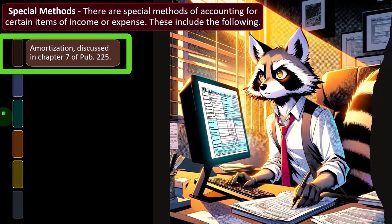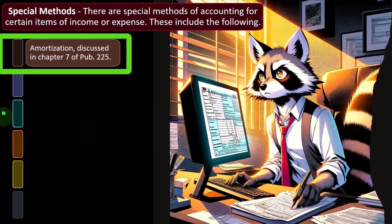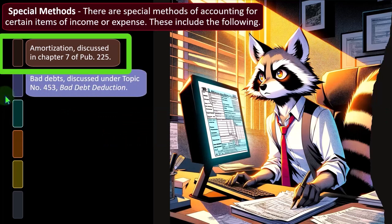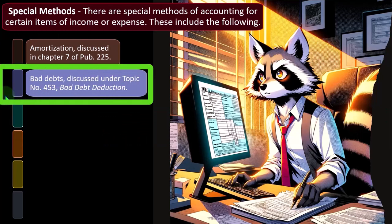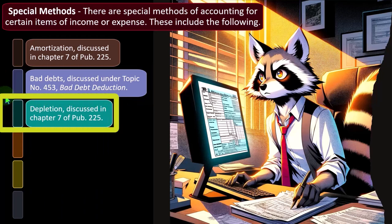Those deviations are probably lobbying-type reasons, where they're trying to accelerate depreciation methods. Therefore, the depreciation rules used for taxes may differ from normal best practices for accounting, and that's another area where things get a bit messy. Bad debts are discussed under topic number 453, bad debt deduction. Depletion is discussed in chapter seven of publication 225.